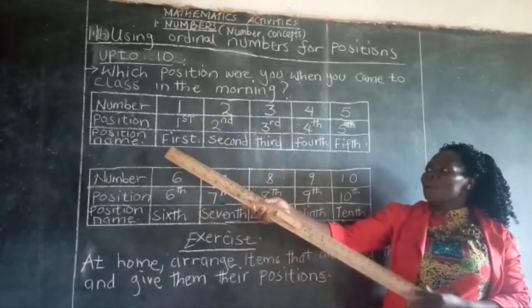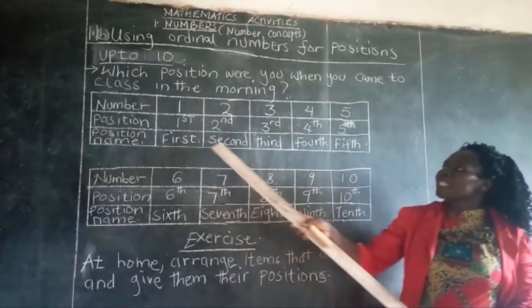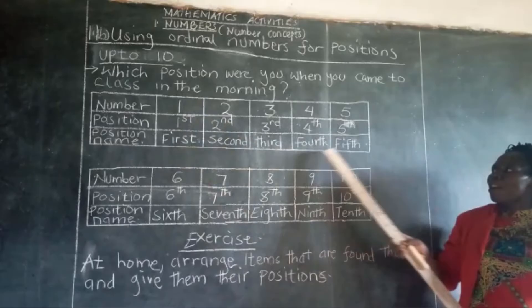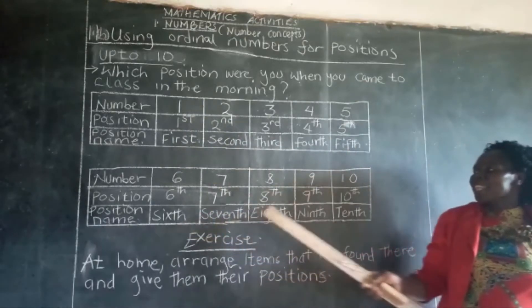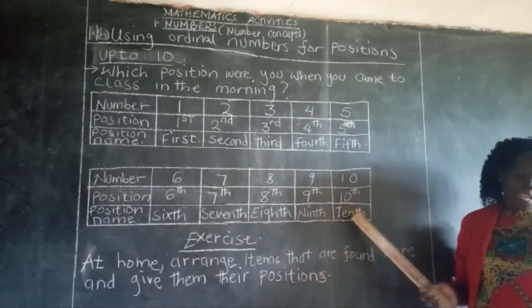So from the first, from number one, these are the position names. We have first, second, third, fourth, fifth, sixth, seventh, eighth, ninth, and tenth.